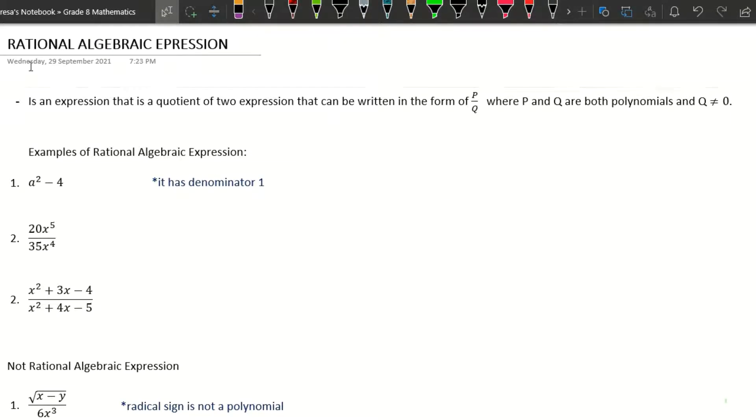Okay, so a rational algebraic expression is an expression that is a quotient of two expressions that can be written in the form of P over Q, where P and Q are both polynomials and Q is not equal to zero.